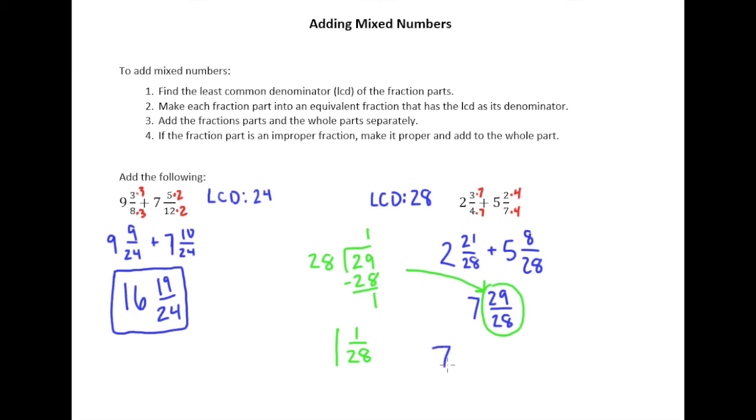And actually, let's not use the word and, let's use the word plus. So it's really 7 plus 29 twenty-eighths. But what is 29 twenty-eighths? 1 and 1 twenty-eighth.